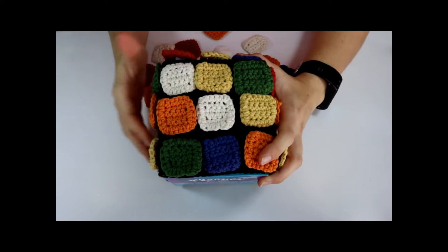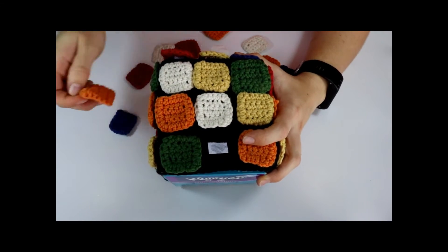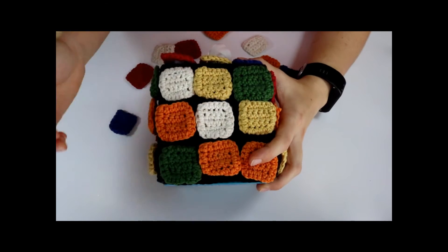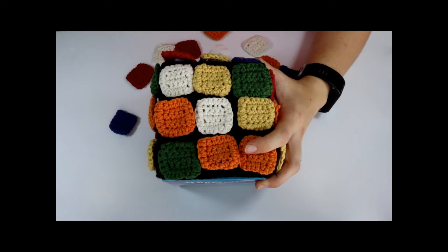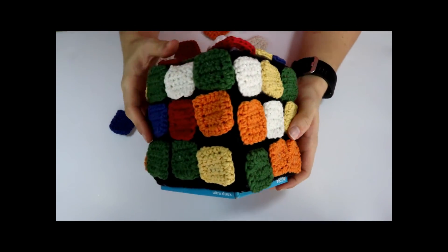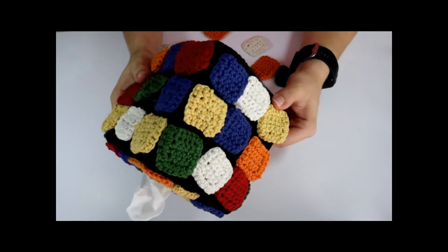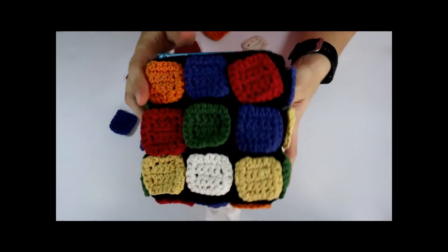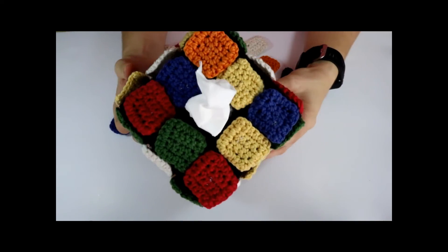As you can see, you can make it all the same color if you like, or different colors. Whatever you feel like making. It's five sides. On the bottom is where the tissue box goes in.